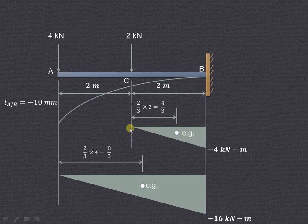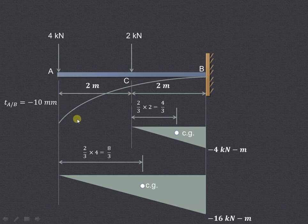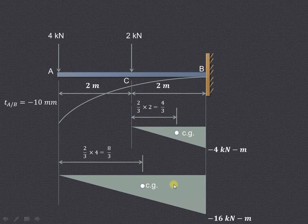The distance of the centroid (CG) from the apex of the first triangle is two-thirds of the base width, which is (2/3) × 2 = 4/3 meters. Similarly, for the 4 kN force, its moment about point B is 4 × 4 = 16 kN·m, and since it is also anticlockwise, it is a negative moment of −16 kN·m with a triangular bending moment distribution. The distance of its CG from the apex is (2/3) × 4 = 8/3 meters.